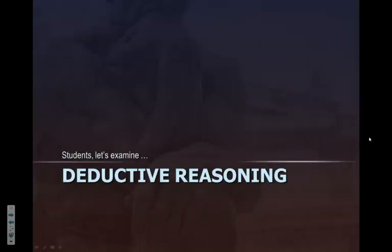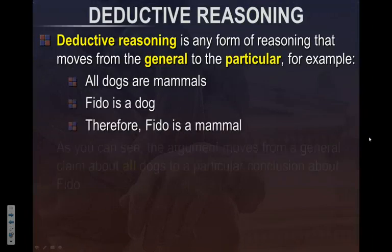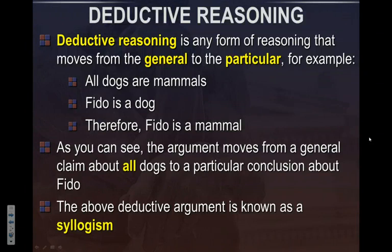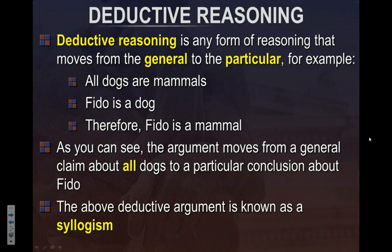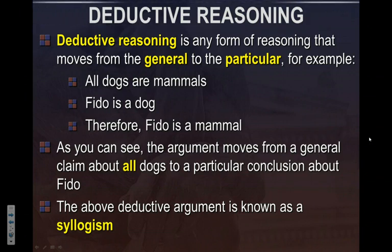Let's start with deductive reasoning. Deductive reasoning is formally where you reason from the general to the particular. For example: all dogs are mammals; Fido is a dog; therefore Fido is a mammal. 'All dogs are mammals' is the general statement. 'Fido is a dog' is very particular. And then we arrive at a conclusion. So deductive reasoning moves from that general statement to a very particular statement.